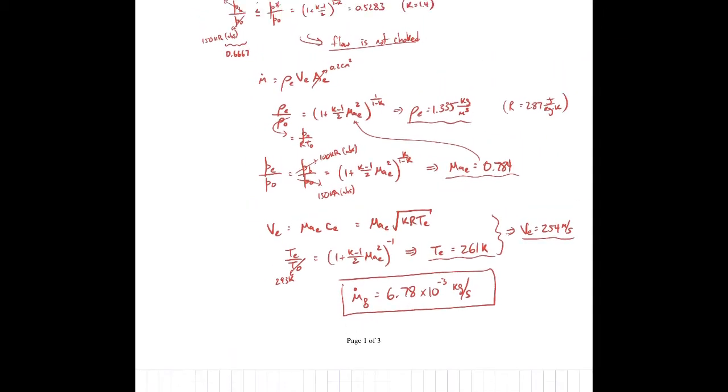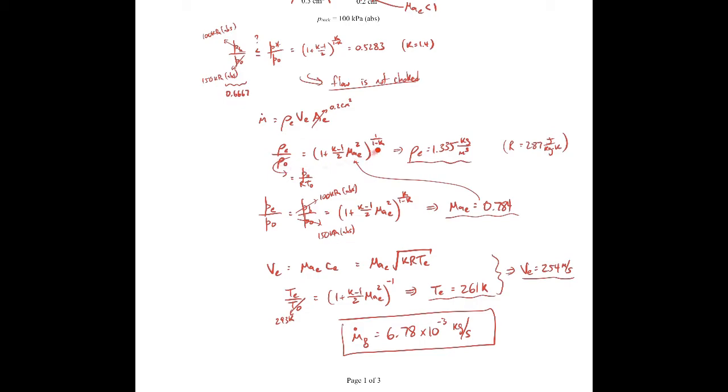To recap hole B: we modeled it as a converging nozzle, checked pb/p0 versus p*/p0 and found the flow is not choked. Mass flow rate equals ρ·V·A at the exit. We used isentropic stagnation ratios to get exit density and temperature, used the pressure condition at the exit — equal to back pressure since Mach number is subsonic — to get the exit Mach number, then computed velocity from Mach number and speed of sound.